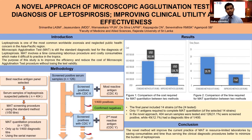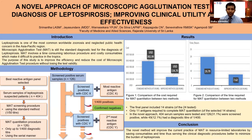Only 11 leptospira antigens were required to complete the MAT quantitation procedure. In this novel approach, 31% screened positive, while 12% had a diagnostic titer of 1 in 400. The standard currently practiced method required 475 runs to complete MAT quantitation, while the improved novel method only required 183 runs. To test 404 serum samples, 392 US dollars were needed for the standard method, while only 134 US dollars were needed in the novel method.